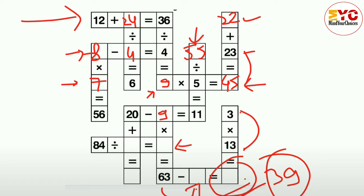9 into which number is equal to 63? 9 times 7 is 63. Now to fill this one. 84 divided by which number is equal to 7? It will be 12. 12 into 7 is equal to 84. Now 20 plus 12 is equal to 32.